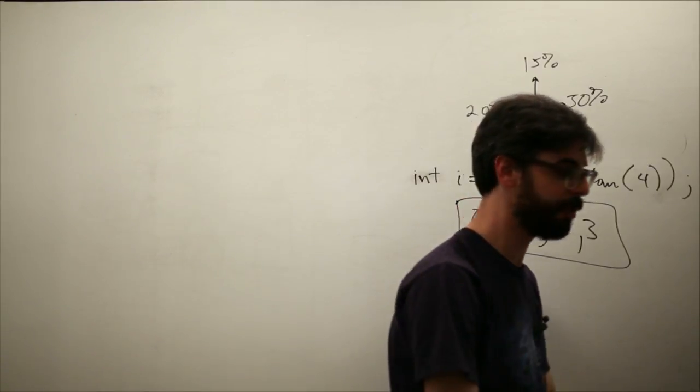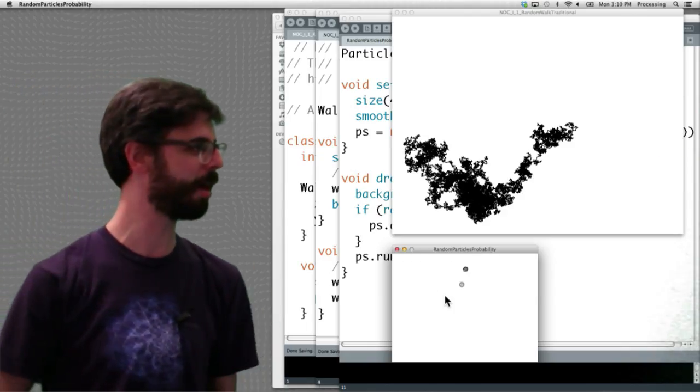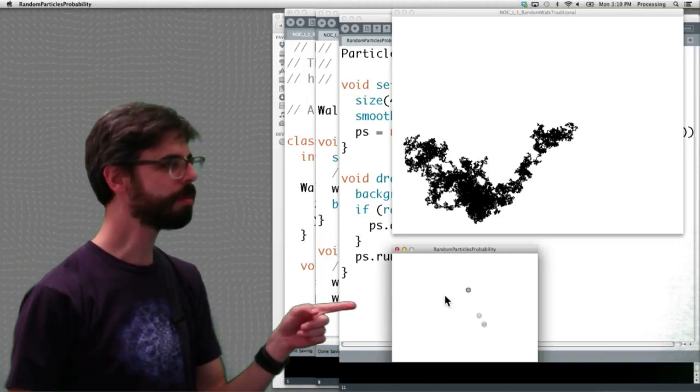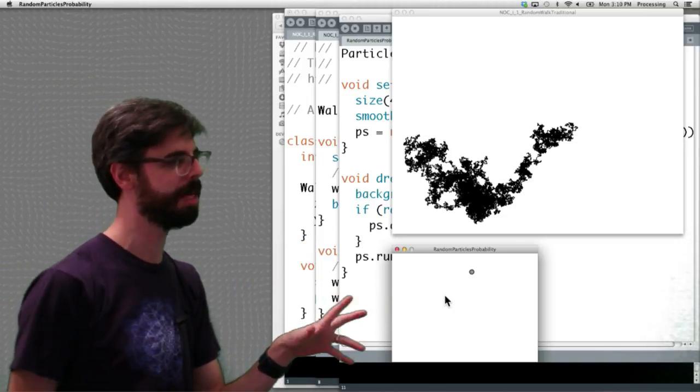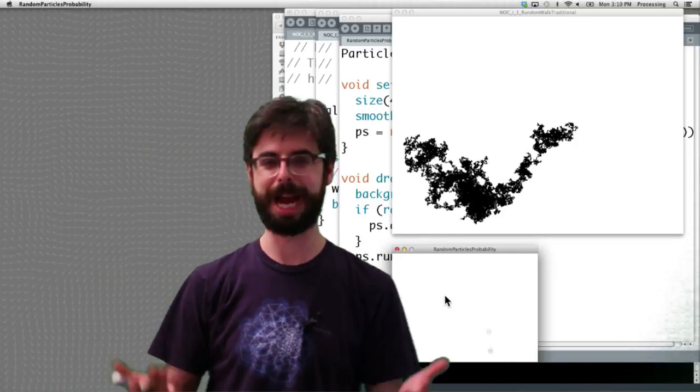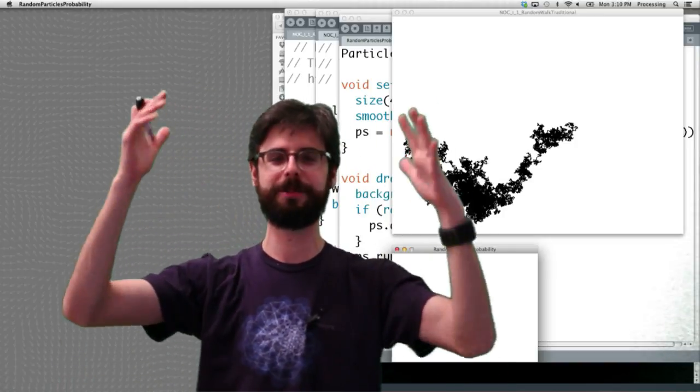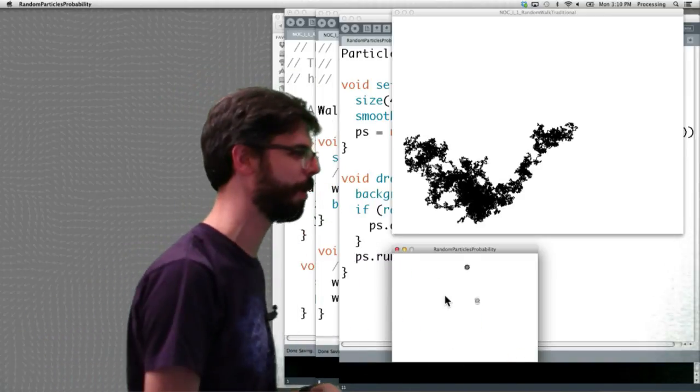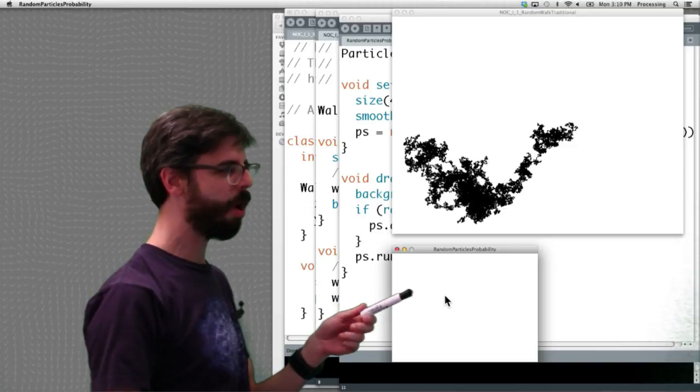Now, this computer over here went to sleep, which means I'm standing in front of nothing. It came back online. This program down here is going to give us a clue. If you look at it, this is a particle system. It's an example that's coming up in the particle system section, which is chapter 4 if you're following along in the Nature of Code book.